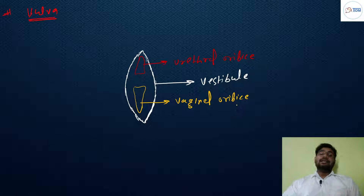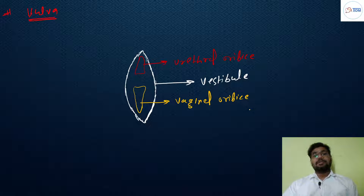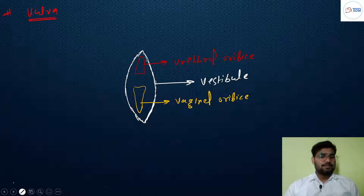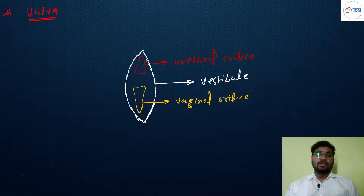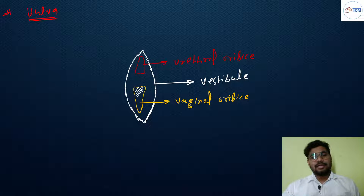The vaginal canal, together with the cervical canal, acts as a birth canal. Regarding the vagina: it does not have any gland — the vagina is devoid of any gland. Second, the vagina is lined by non-keratinized epithelial tissue. The vagina is also covered by a thin membranous structure called the hymen.